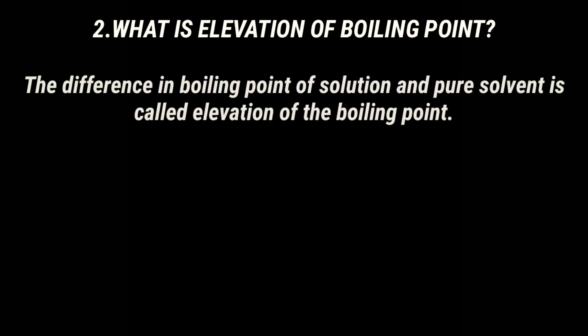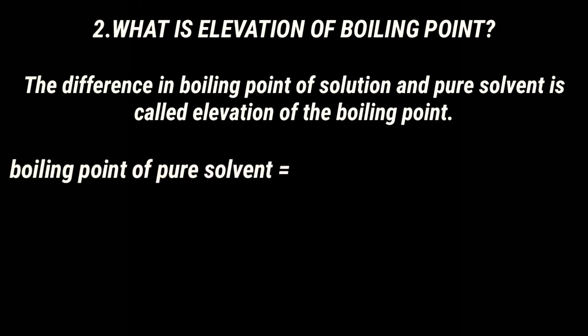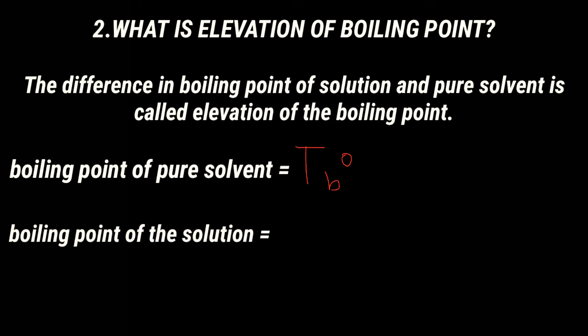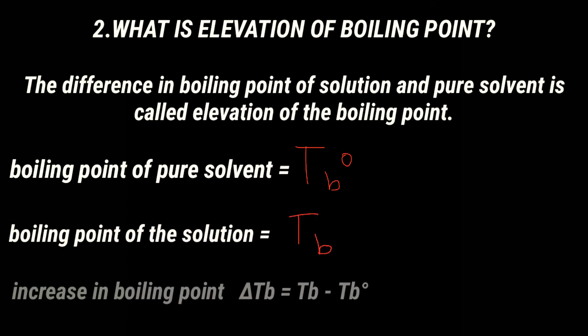Now, what is elevation of boiling point? The difference in boiling point of the solution and the pure solvent is called elevation of the boiling point. Boiling point of pure solvent equals T_b°; boiling point of the solution equals T_b. The increase in boiling point, delta T_b, equals T_b minus T_b°. This is known as elevation in boiling point.